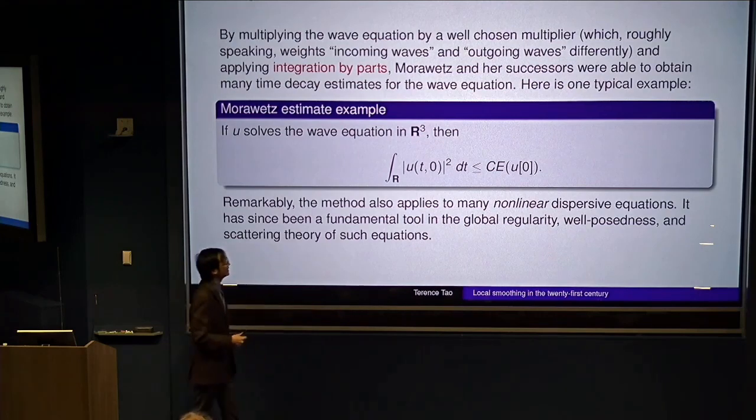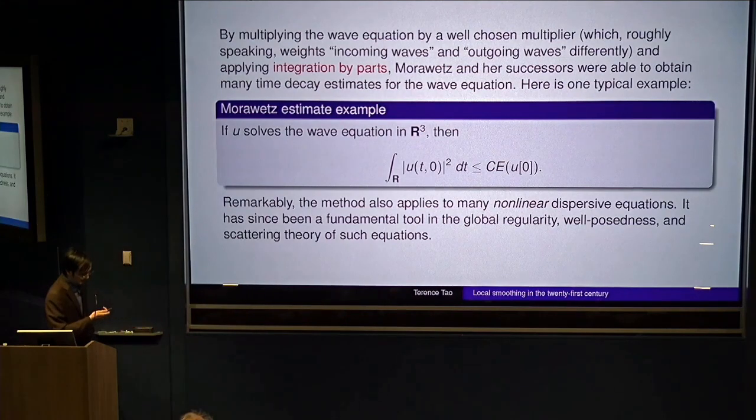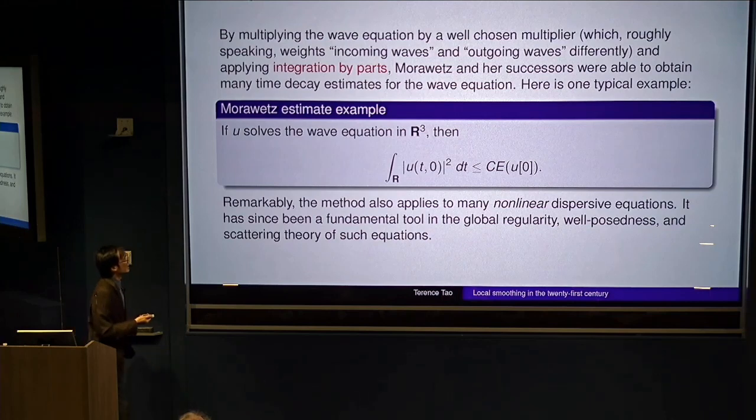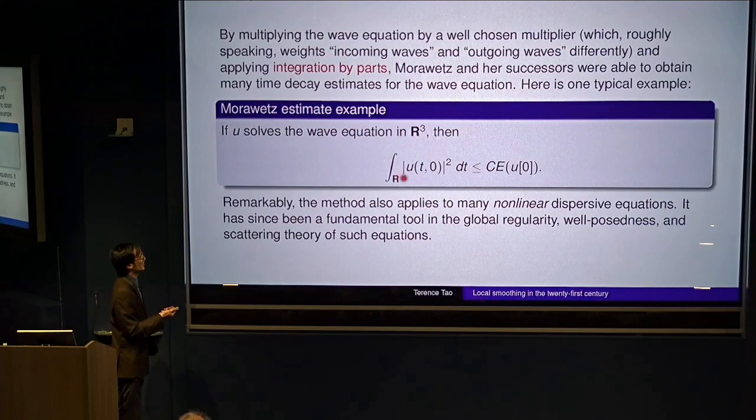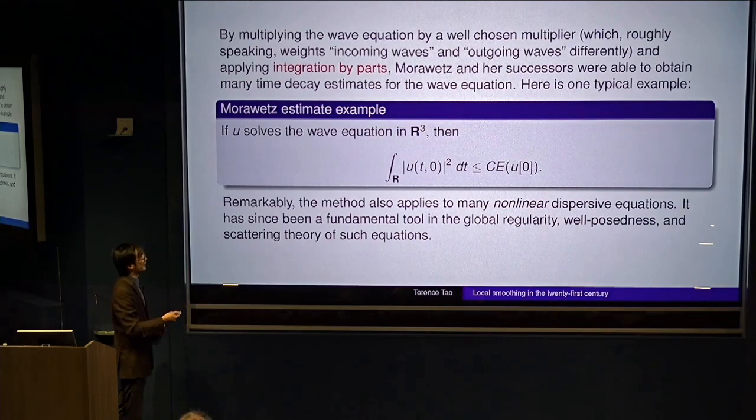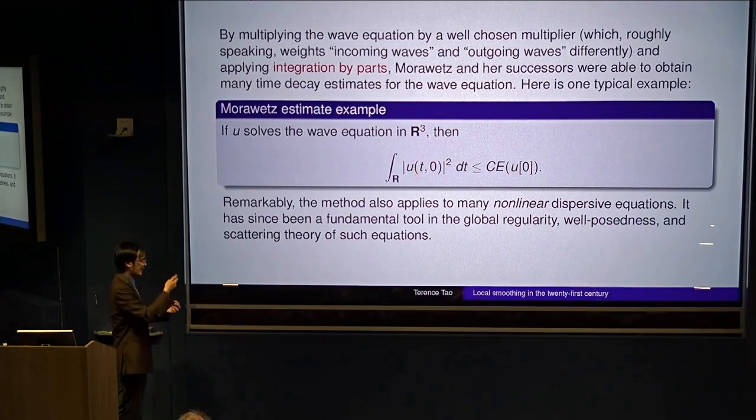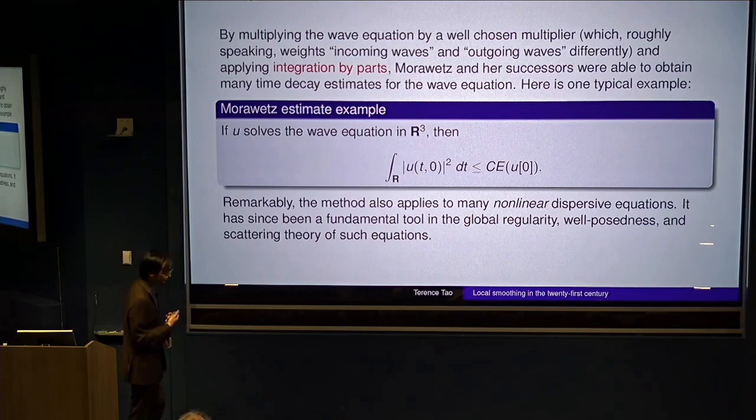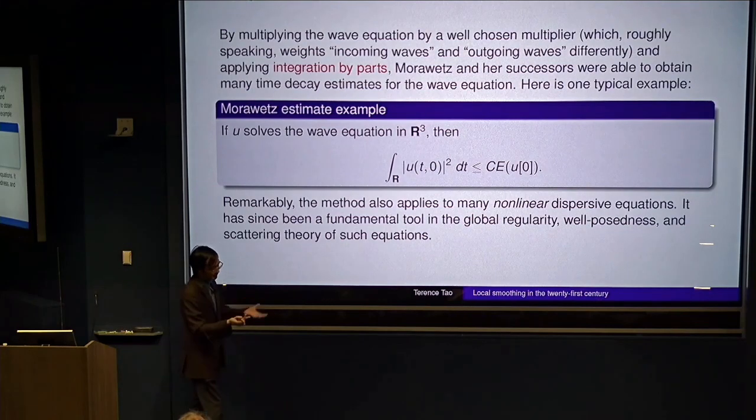So if you put all this together, you can prove these Morawetz estimates. And there's a bunch of them, and they're all kind of useful. Here's one of the simplest ones. If you have a three-dimensional wave of finite energy, then there's some time decay at the spatial origin. So if you just look only at the origin, and you just look at what the wave is doing at the spatial origin, over time, the wave will dissipate.